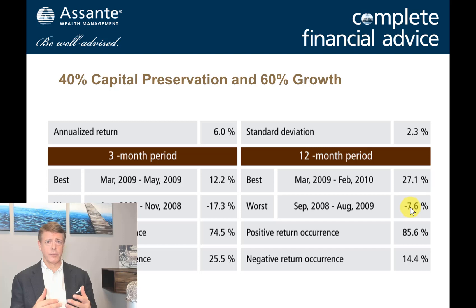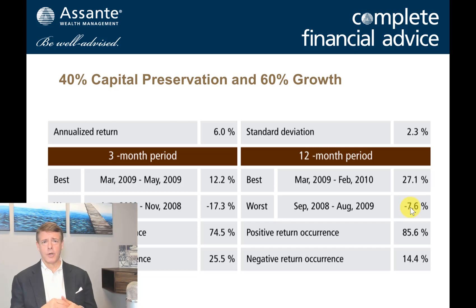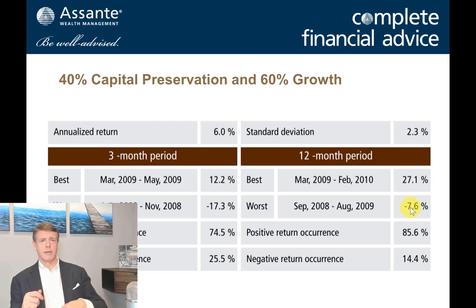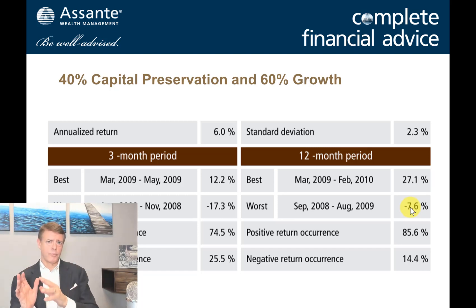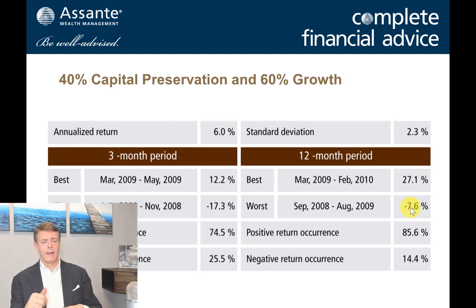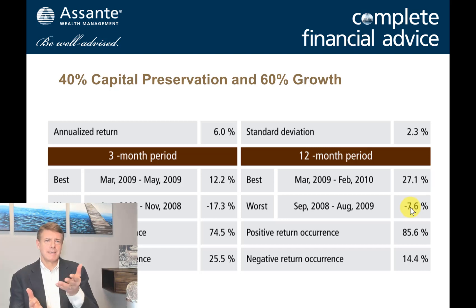That worst year of minus 7.6% would have been tough to go through, but far less than what the overall stock market did. If you look at 2008 to early 2009, at its worst the U.S. market was down over 50%, the Canadian market not much better, and global markets were down significantly. By having capital preservation in the portfolio — assets like bonds and real estate that tended to do well as safe haven assets — it helped create less total volatility and downside on the portfolio.